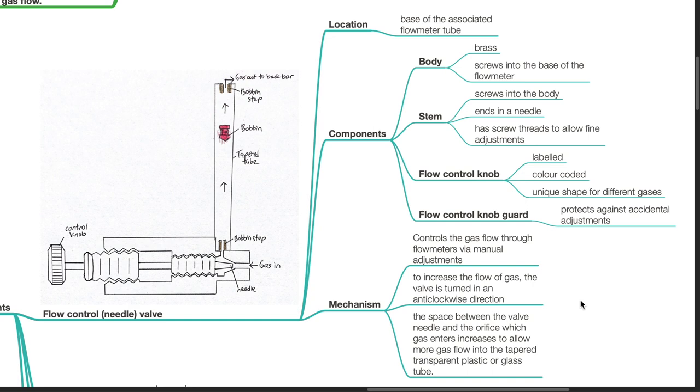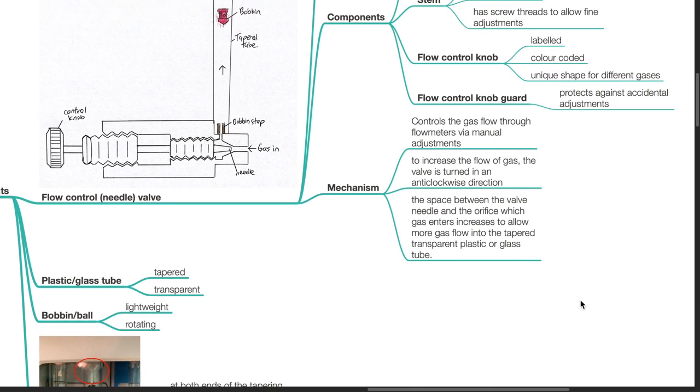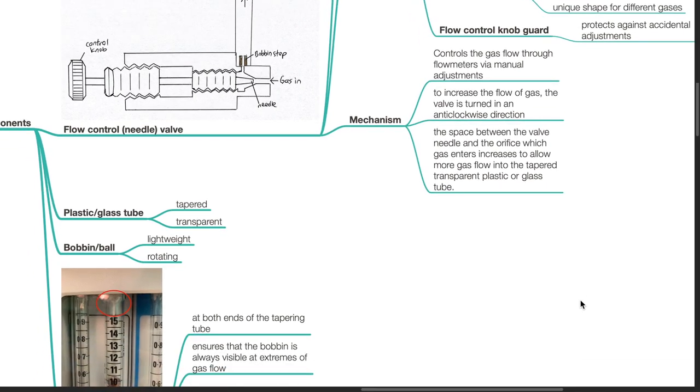Mechanism: It controls the gas flow through the flow meter via manual adjustments. To increase the flow of gas, the valve is turned in an anti-clockwise direction. The space between the valve needle and the orifice which gas enters increases to allow more gas flow into the tapered transparent plastic or glass tube.